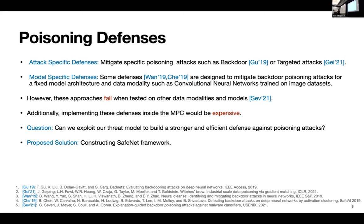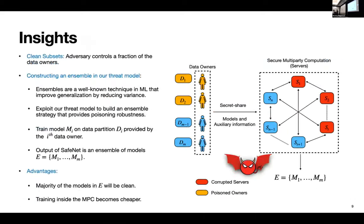So that's where we come up with our SafeNet framework. So before we dive deeper into SafeNet framework, we'll look at some insights that we observed during this. So the first thing is, what you'll observe is the adversary is able to control a small fraction of the data owners. And looking at these data sets, we ask ourselves the question, what if we do ensembling in this case? So ensembling in machine learning is a very well-known technique where what you do is given a data set, you create subsets and you train models on these subsets, followed by you combine them together to create an ensemble. But it's primarily done in ML to improve generalization by reducing variance for the error.